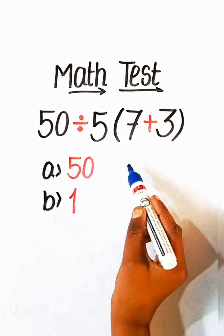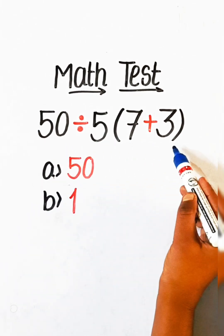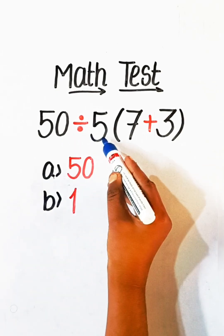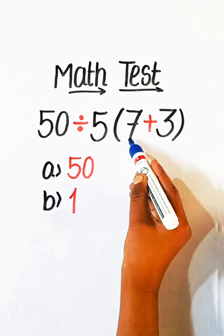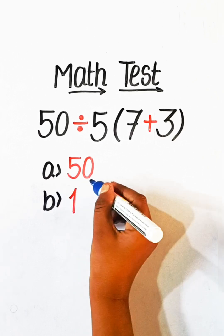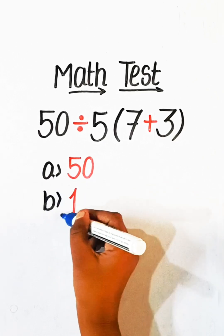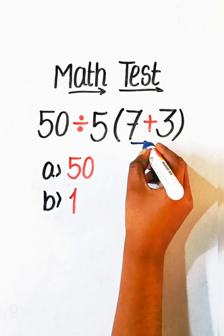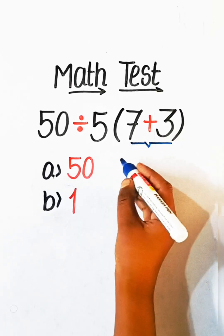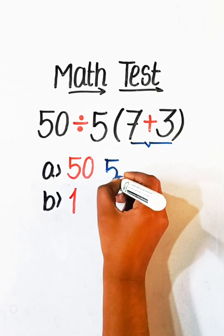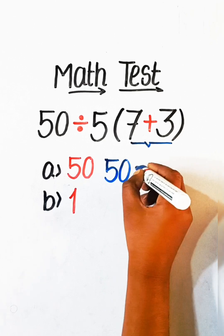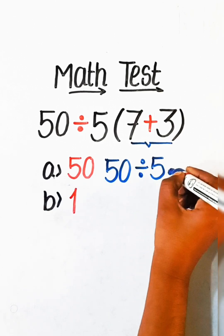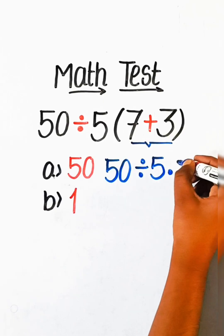Hello everyone, in this video we will solve this basic math equation: 50 divided by 5 under bracket 7 plus 3 equals to what? So let's solve this. First we have to solve the bracket part, so we will write 50 divided by 5 multiplied by 7 plus 3.